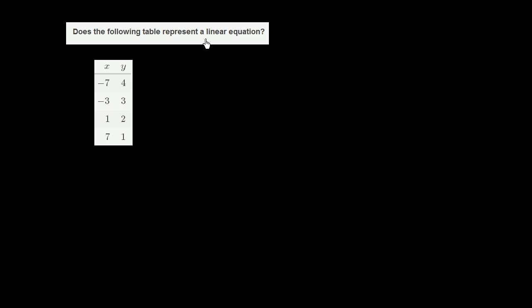Does the following table represent a linear equation? So let's see what's going on here. When x is negative 7, y is 4. Then when x is negative 3, y is 3.